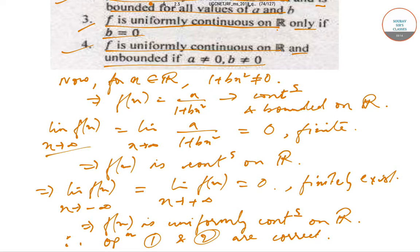First of all, there is no restriction on a and b, therefore option 3 is false. It is uniformly continuous but the restriction is not there, so option 3 is false. And here it is said that f is uniformly continuous on R and unbounded, but we have already found out that f(x) is bounded. So therefore option 4 is also false.